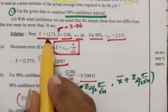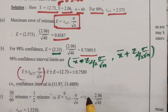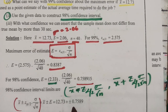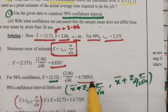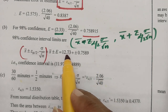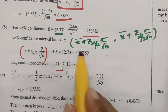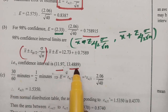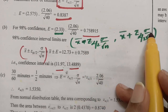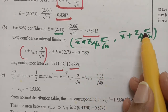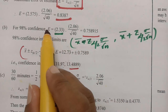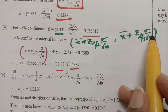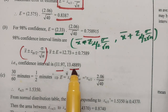X bar is 12.73. So first we compute 12.73 plus or minus 0.7589. Subtracting gives the lower bound and adding gives the upper bound. This is the 98% confidence interval. The formula for confidence interval is X bar plus or minus E, where E is the maximum error Z alpha by 2 · sigma / root n. Making the subtraction gives one value and making the addition gives the other value.